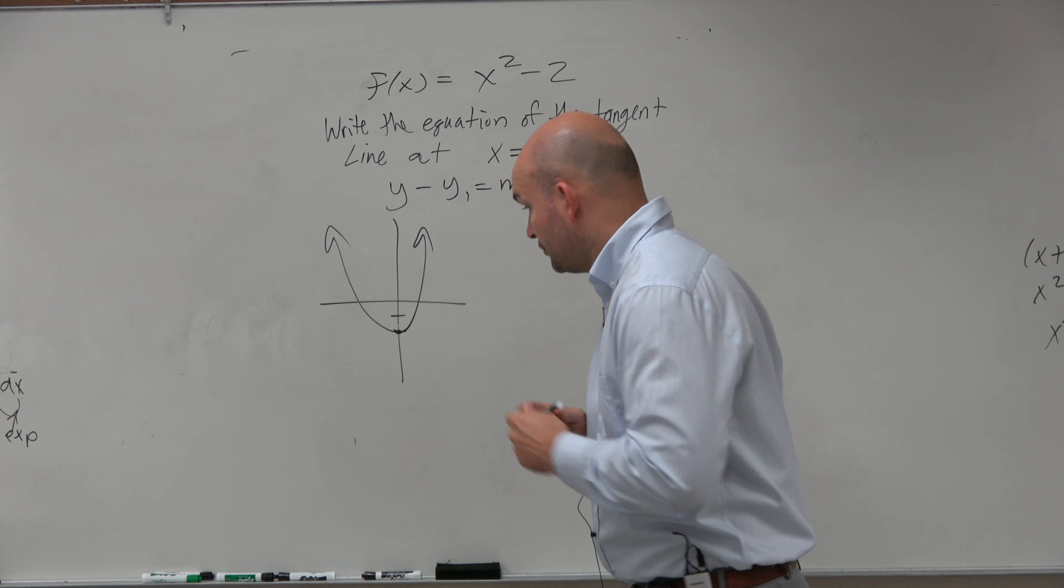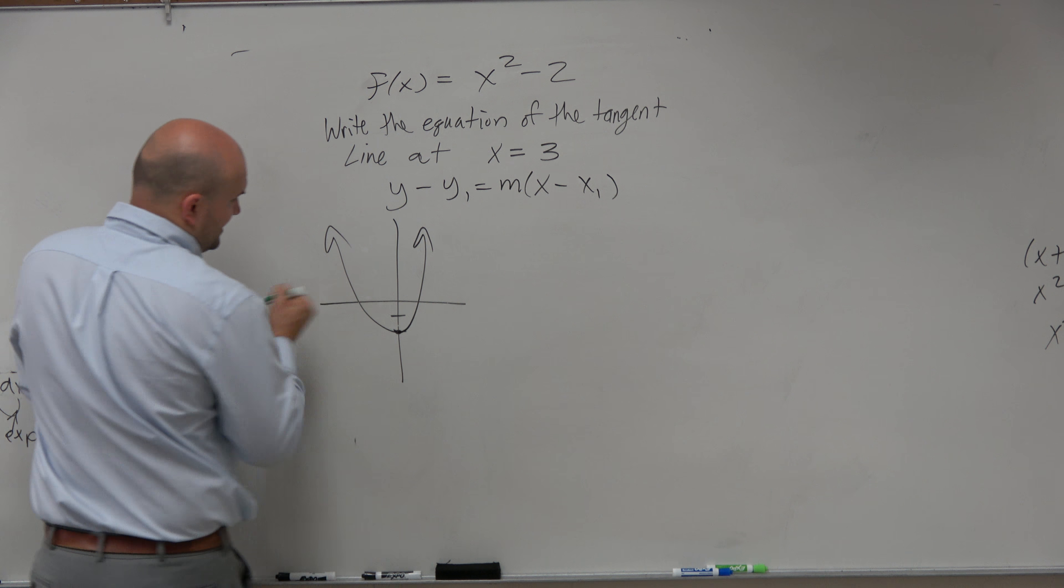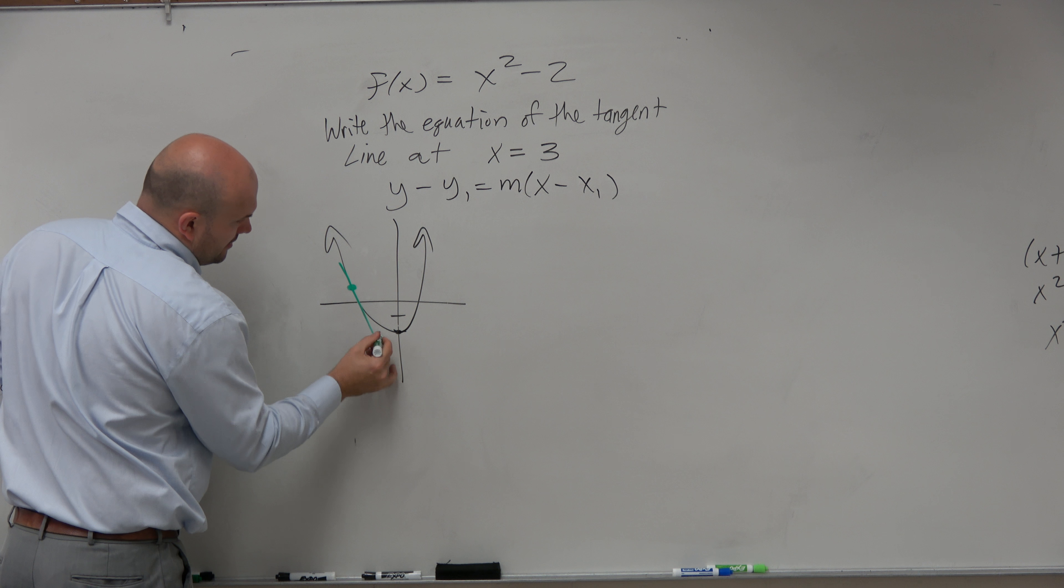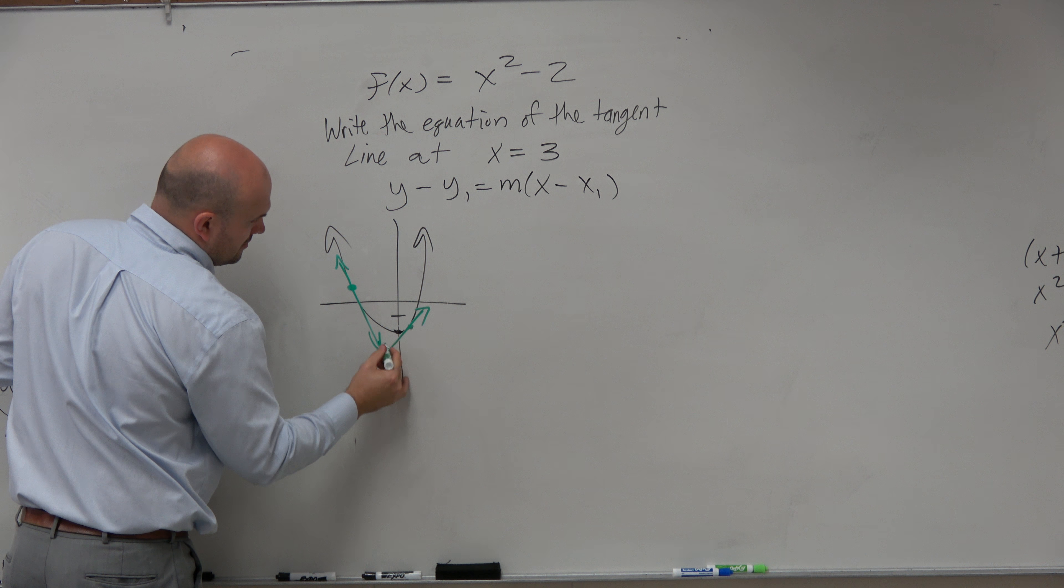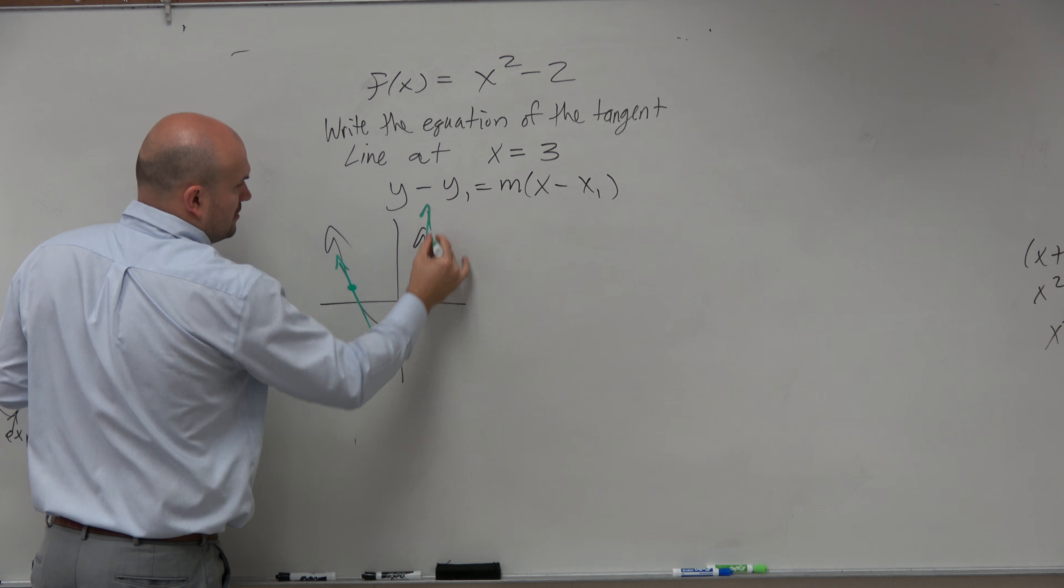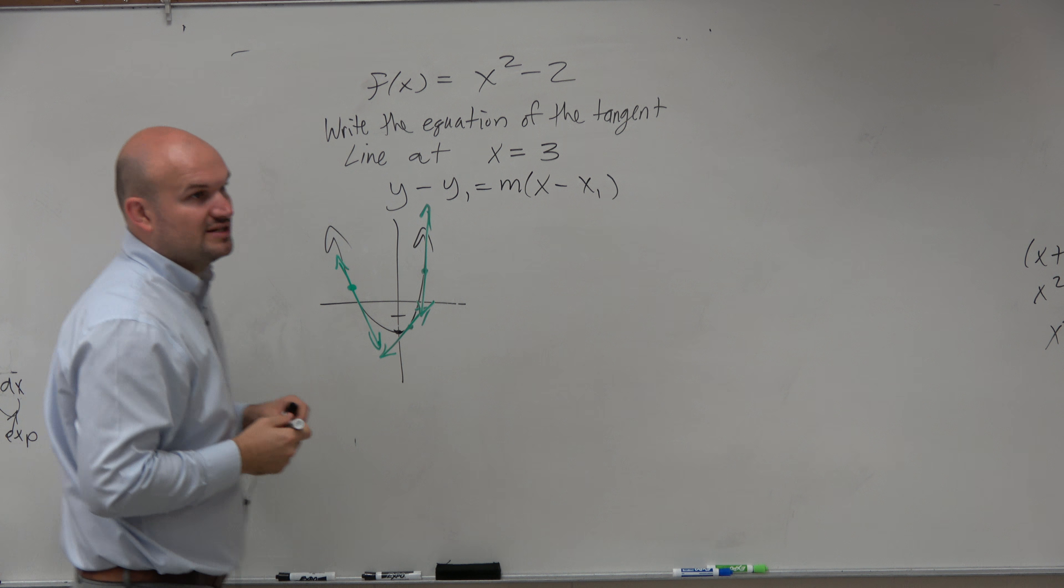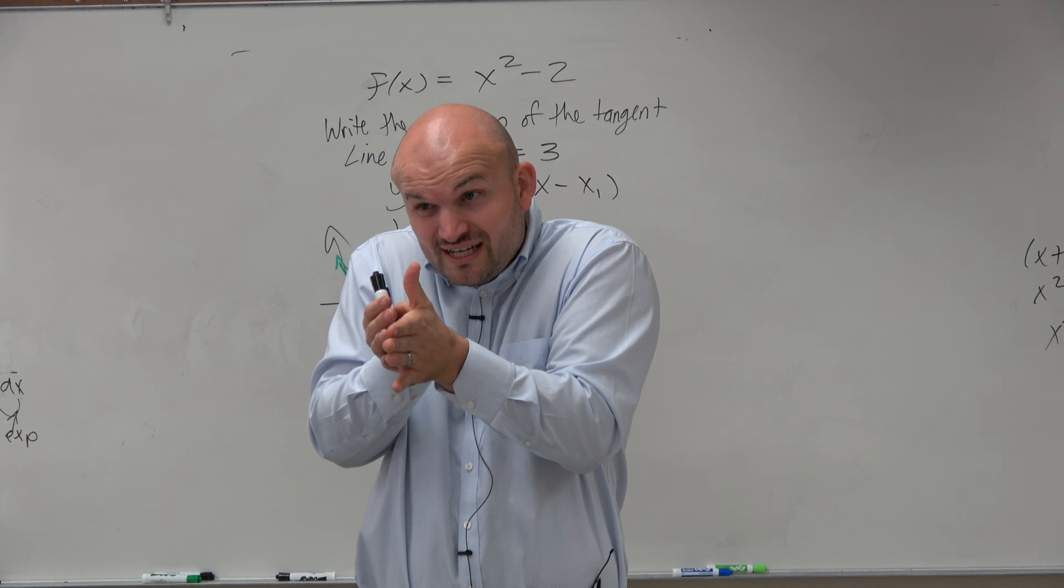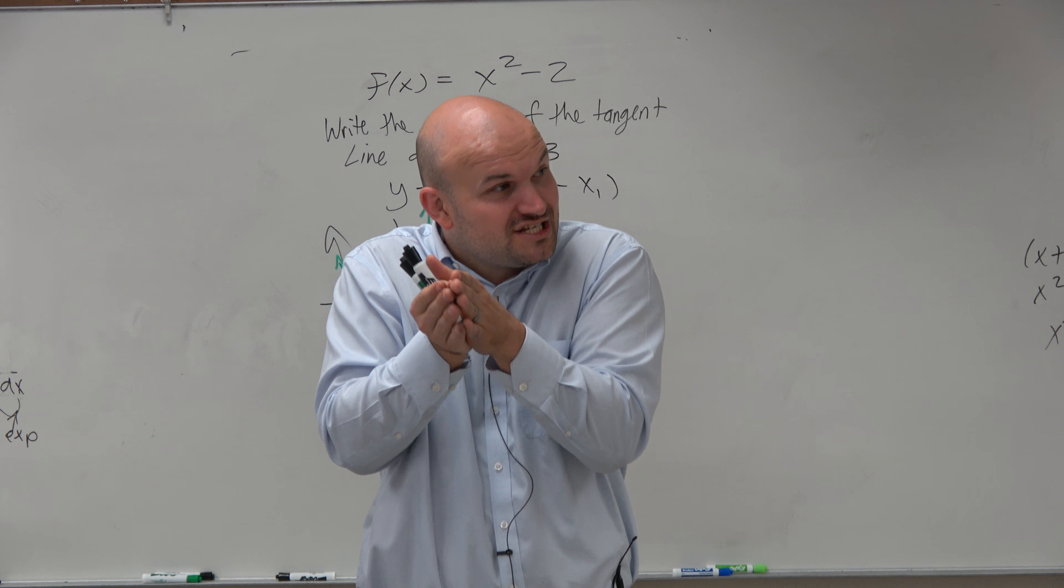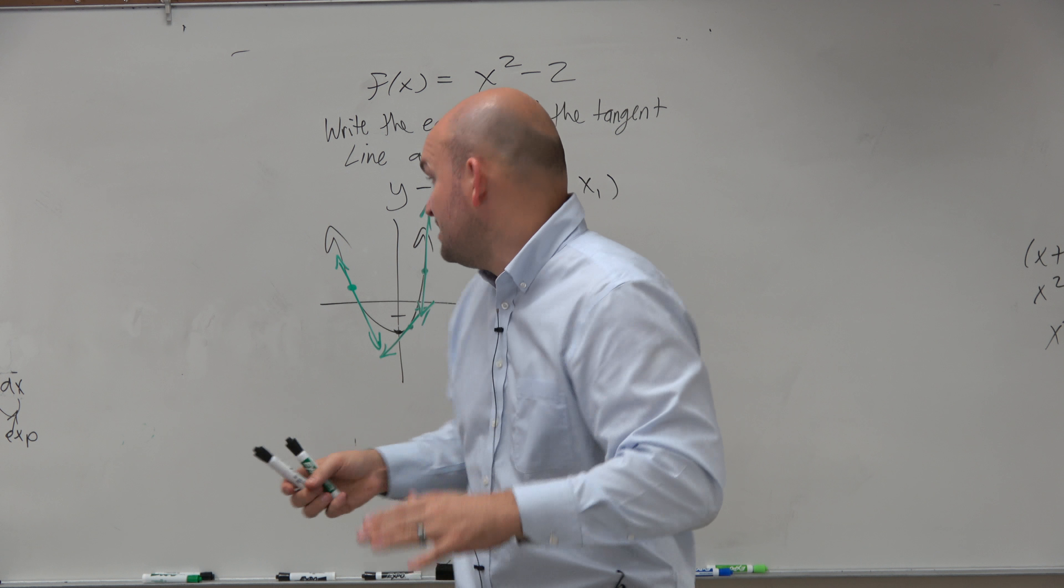Now, you would agree with me that the slope at different points is completely different, right? The equation of the local linearity, the slope of the tangent line, is completely different at different points.